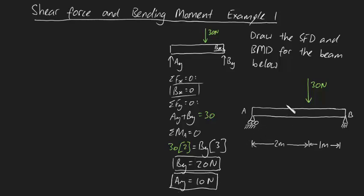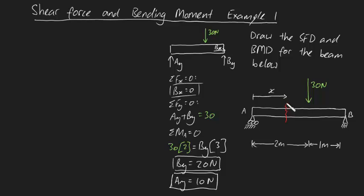So already, without even worrying about shear forces or bending moments, we've found the reaction forces at the supports. Now what we're going to do is make a cut selection somewhere along the beam. I'm going to make a cut at a distance X from the very left, and then analyze the free body diagram of that section of the bar.